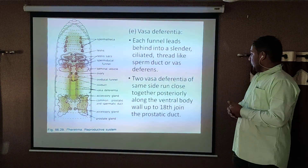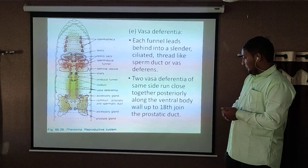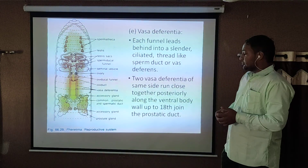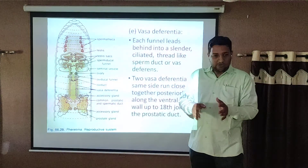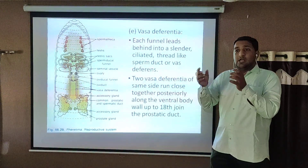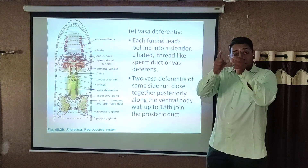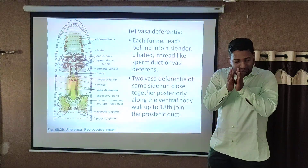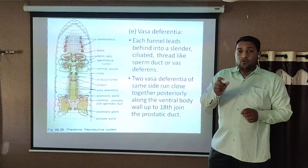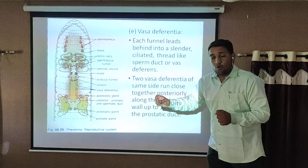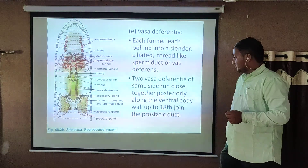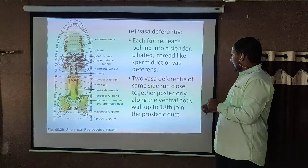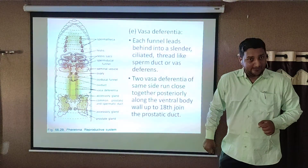The two vas deferentia run along the ventral body wall to the 18th segment, where they join the prostate duct. Both ducts on each side run parallel and closely together, and they directly open into the prostate duct, which is present in segment number 18.